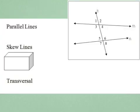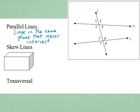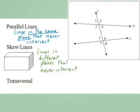We need to define some basic terms first. Parallel lines are lines in the same plane that never intersect. Now, why do I have to specify that they are in the same plane? Is it possible for lines to never intersect and be in different planes? Yes — that's what skew lines are. Skew lines are lines in different planes that never intersect.